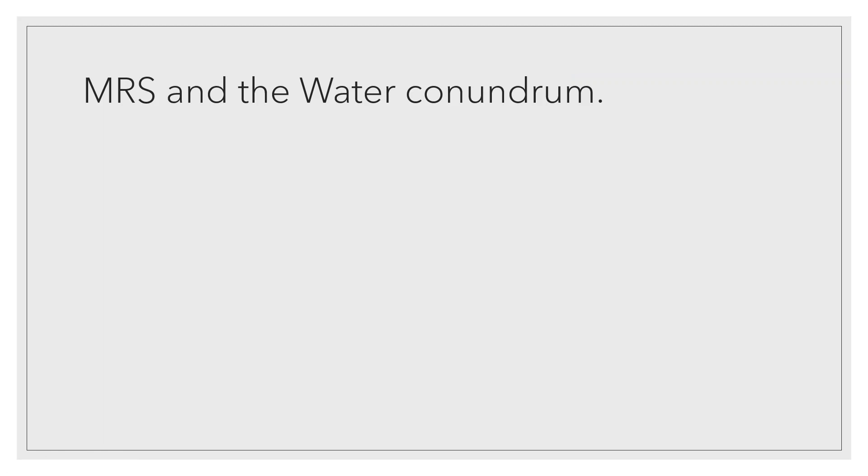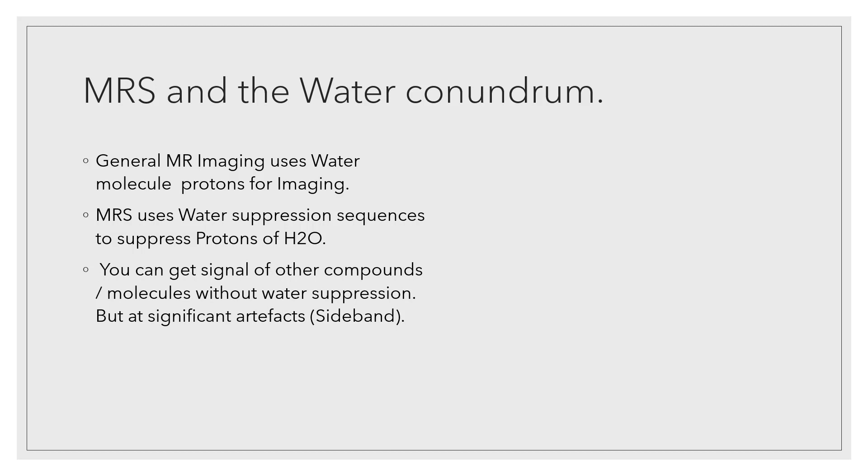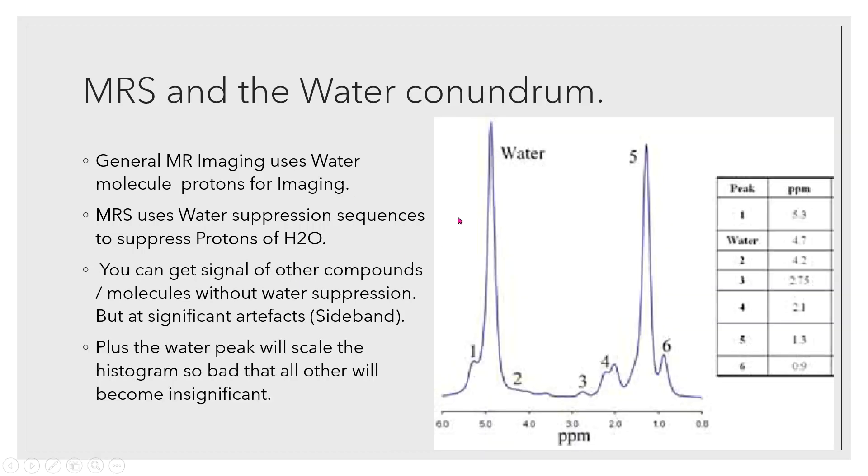Then comes the MRS and water connection. This is one of the most important parts of MR spectroscopy. Where general MR likes water protons for imaging, MRS doesn't need water protons. We suppress the water using water suppression sequences and generally avoid fat as well. The reason is this - this is what you call a sideband artifact. Whenever you fail to suppress water molecules and you plot the data into a histogram, you will get a graph depiction something like that - somewhere around the 5 ppm range you will have a very large peak of water which will be so towering that it will scale down the actual peaks which you want. This is actually an NAA peak which is now very insignificant. This will also cause intermittent other artifacts. The precision ratios will change, the values will not be that accurate. So water peak will scale the histogram so bad that all others will become insignificant.